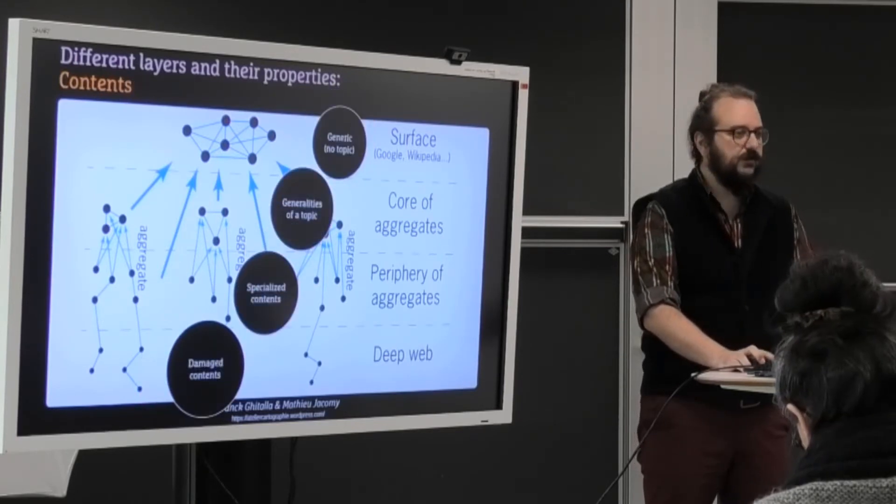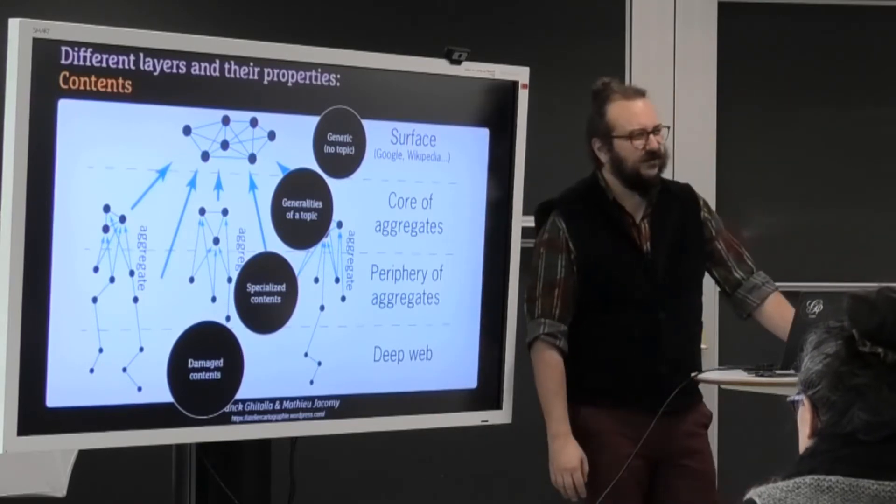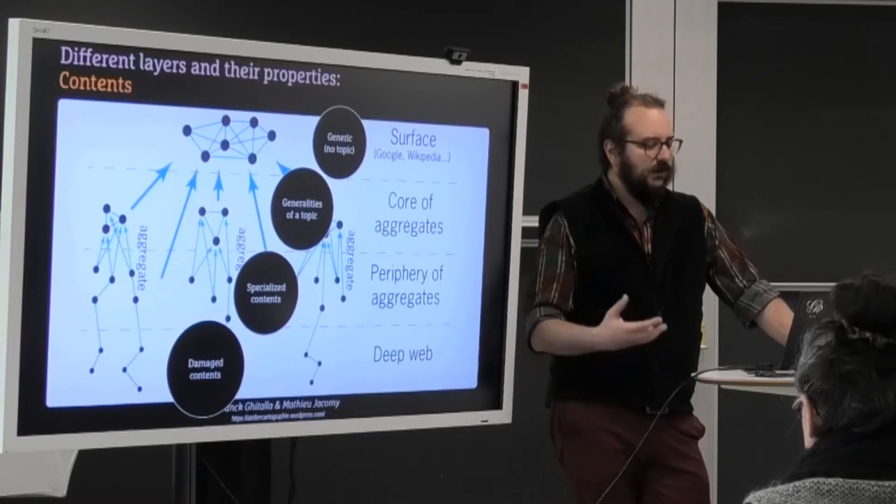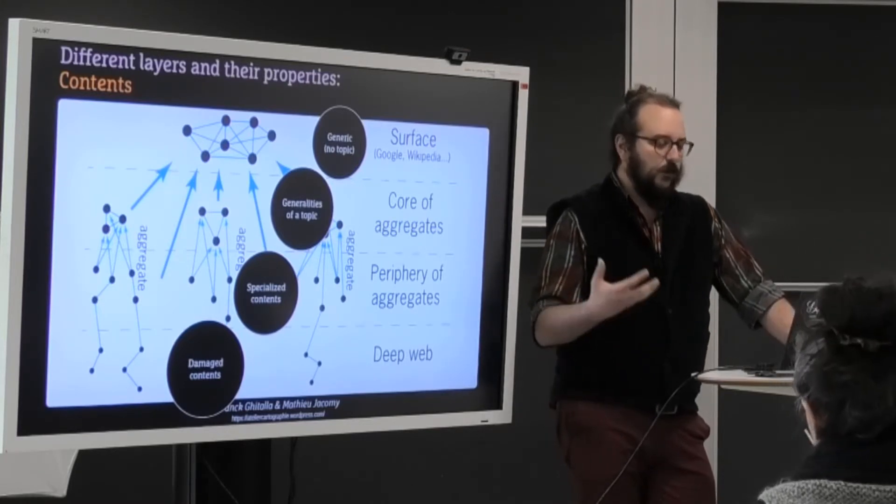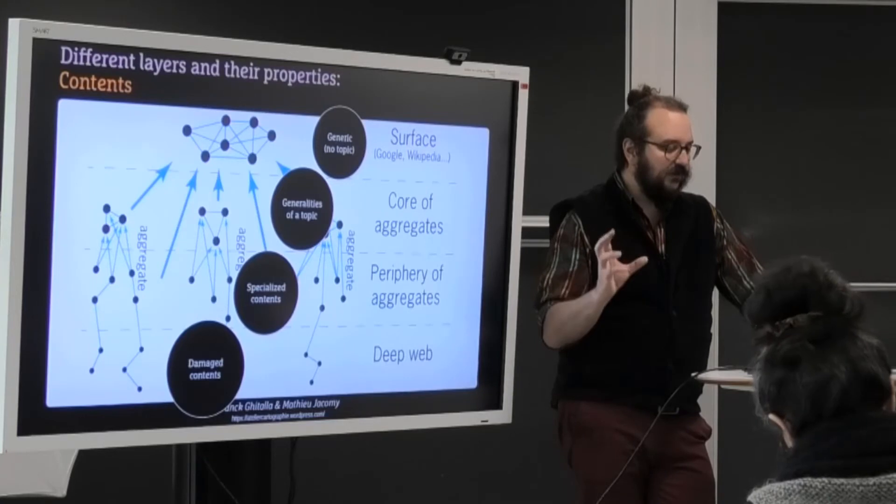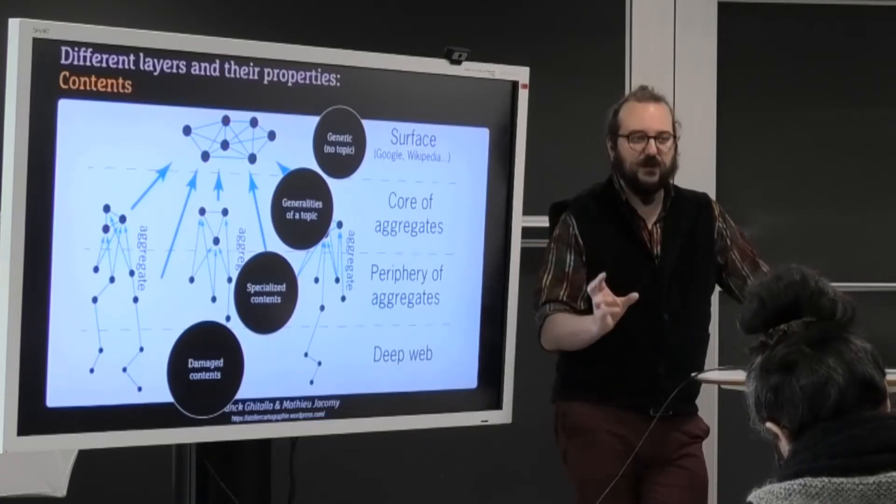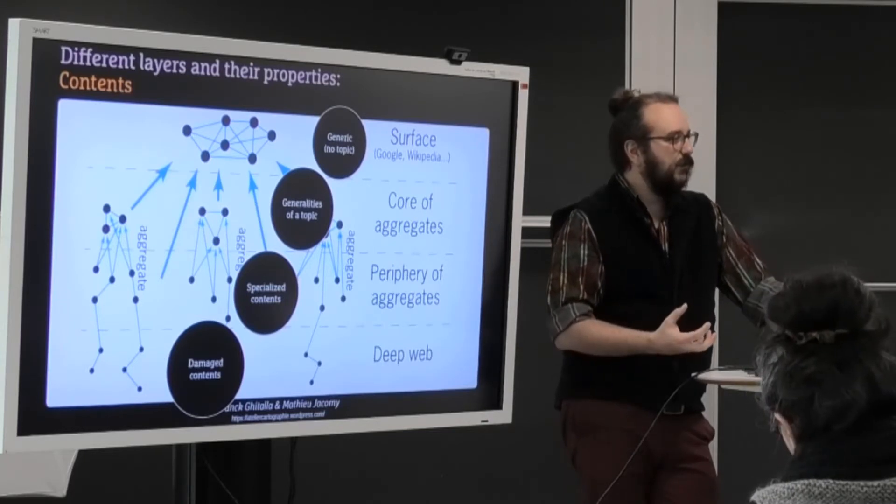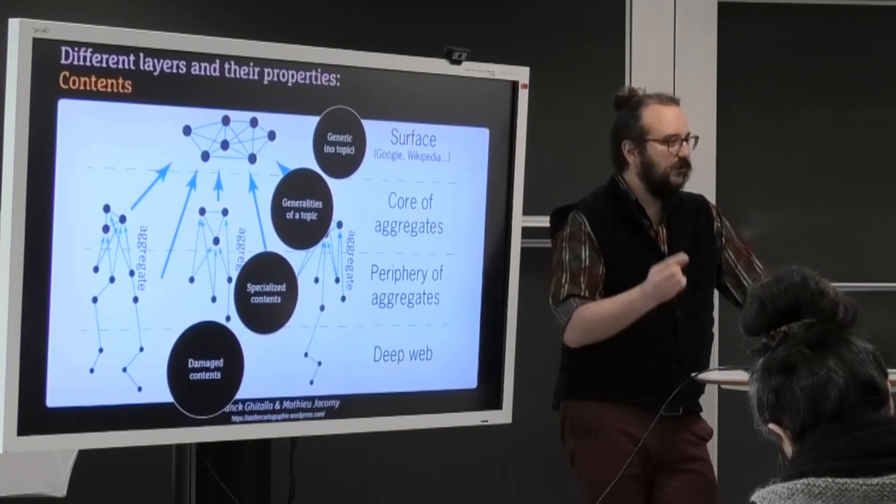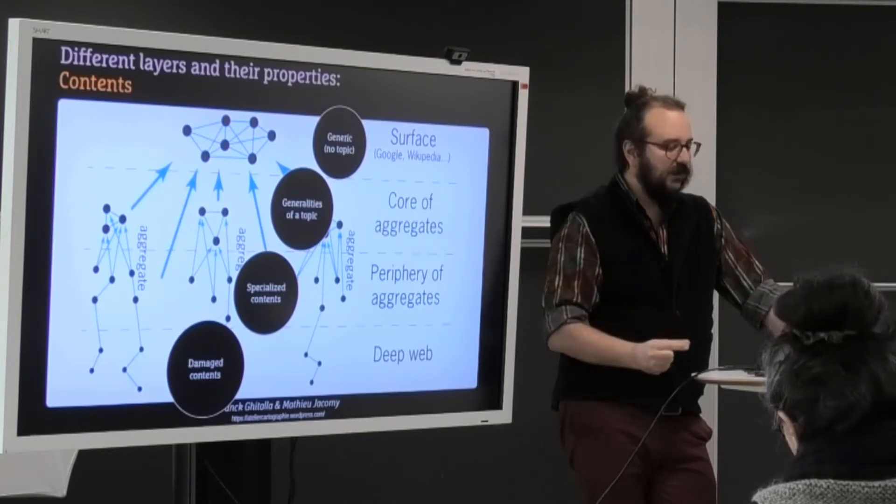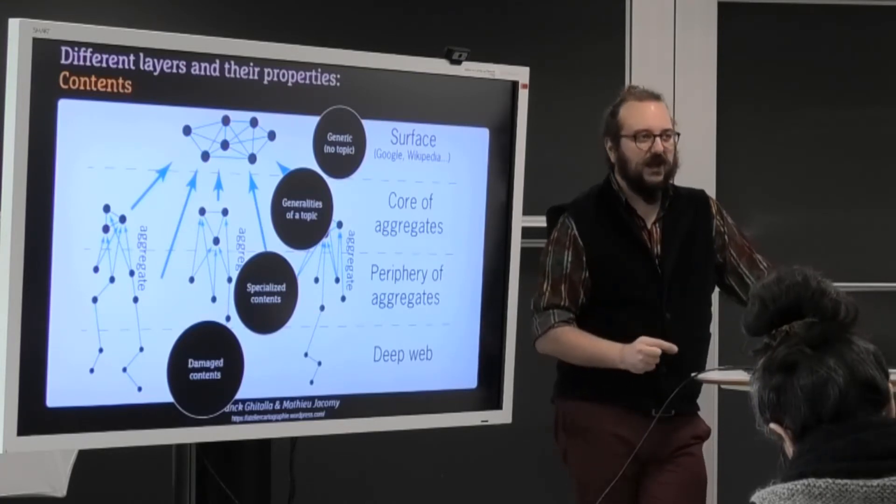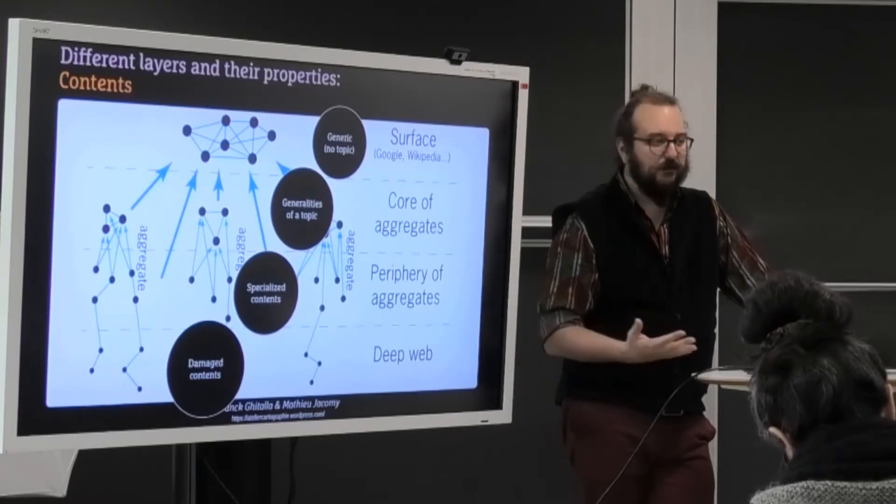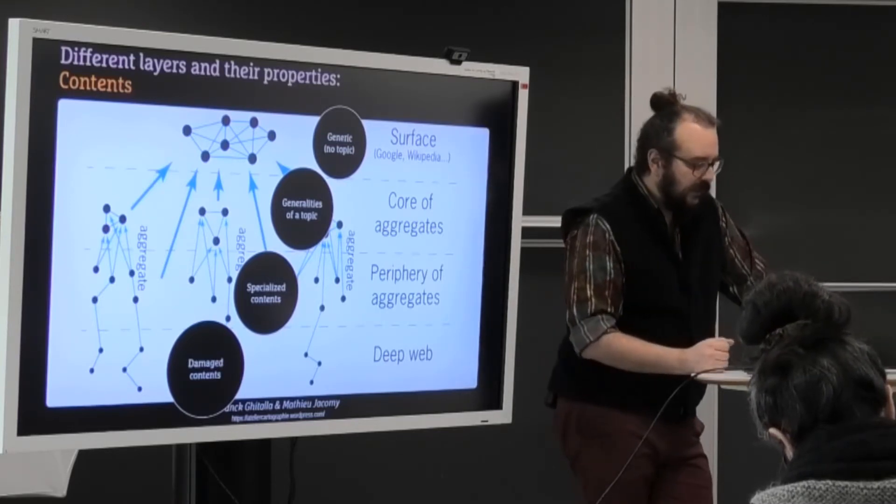And finally, the contents. And this is the most important and not so intuitive property of these layers, is that the surface tends to be generic, while the aggregates are specific on a topic. But even inside a topic, you have generalities about the topic and you have more specialized contents that are even more specific, even given a single topic. And the deep web might be either super specific or even damaged so that we can't even sometimes find the topic of a web page.